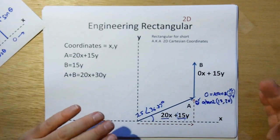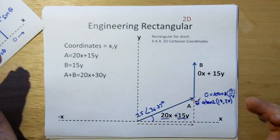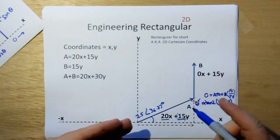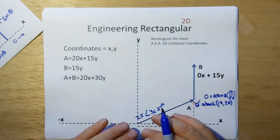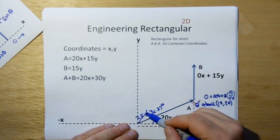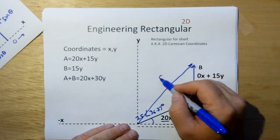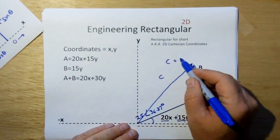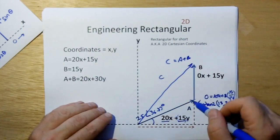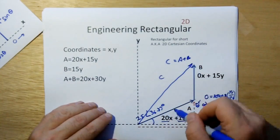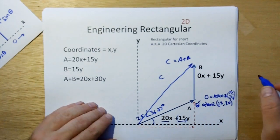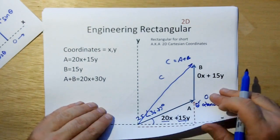That's the conversion between engineering polar and engineering rectangular. We're doing the exact same thing: the same direction and distance to the final resultant vector C. C is equal to A plus B — we'll talk about vector addition in a few minutes. That would be what we're showing here: addition of two vectors to get a final vector C. We'll talk about that later.